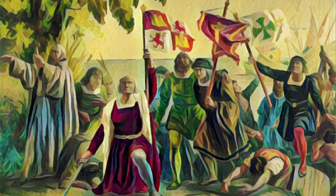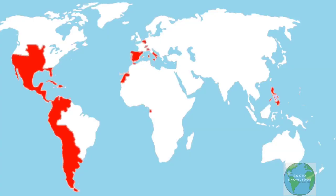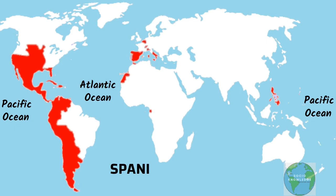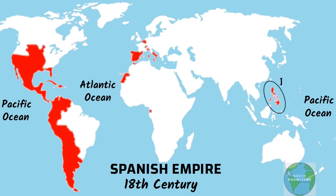In 1492, when Christopher Columbus landed in the Caribbean, he proclaimed the land in the name of the King of Spain. Over the years, Spain conquered the whole of Central America, the whole of South America except for Brazil, and also much of North America. It also conquered the Philippines and the island of Guam in the Pacific.